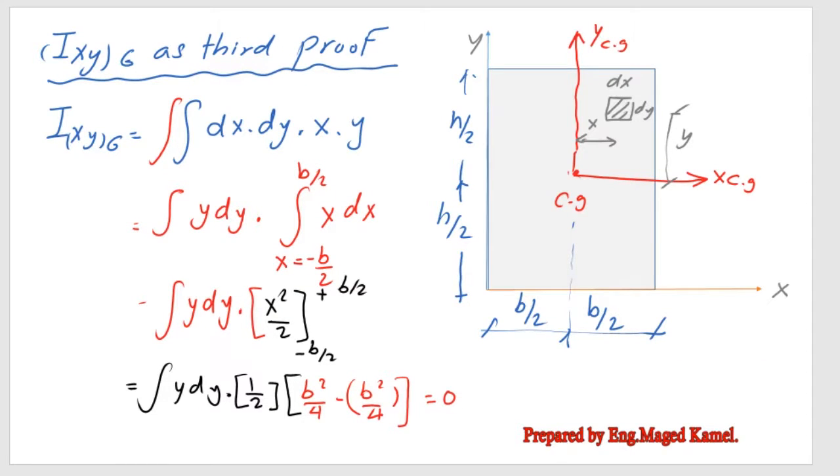Hello everyone, in this new lecture there is a third method to estimate I_XYG as a third proof. Again, we have our rectangle with base B and height H, and we have external two axes X and Y at the left edge corner of the rectangle, and we have X_CG and Y_CG.